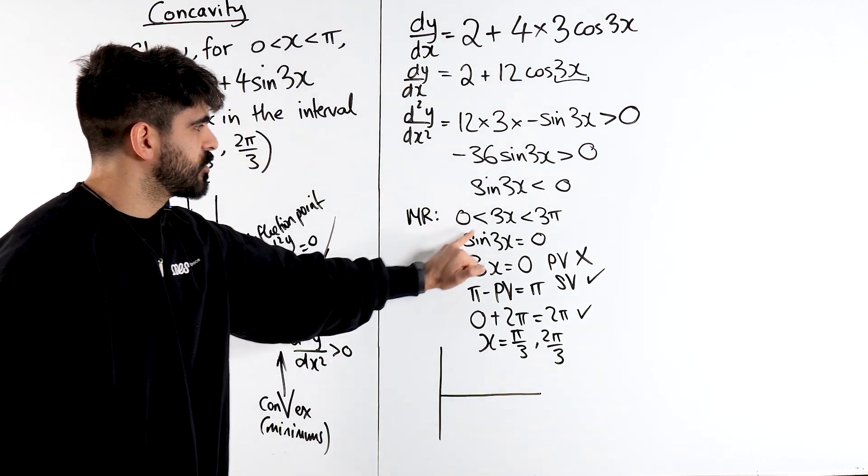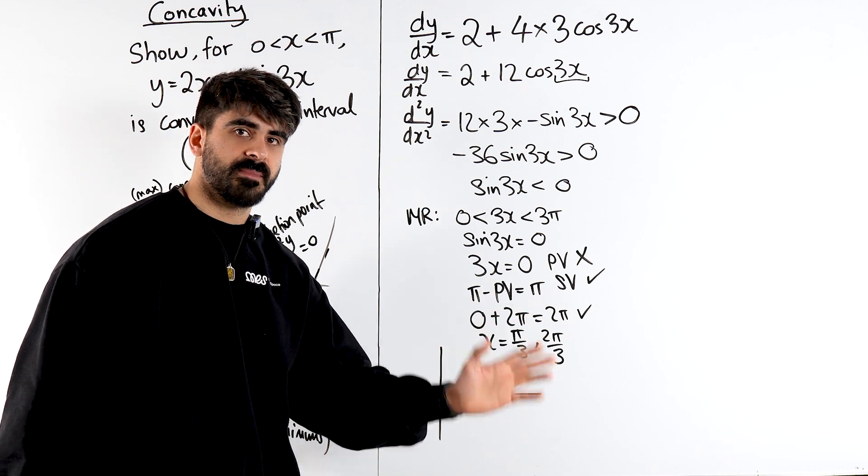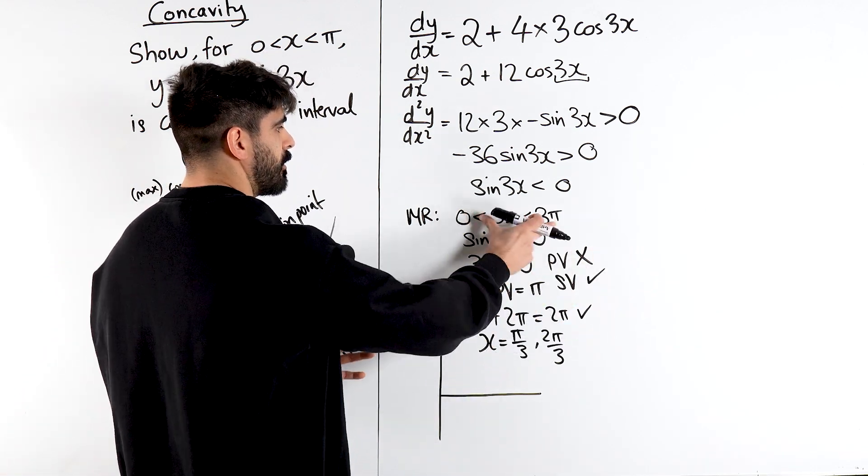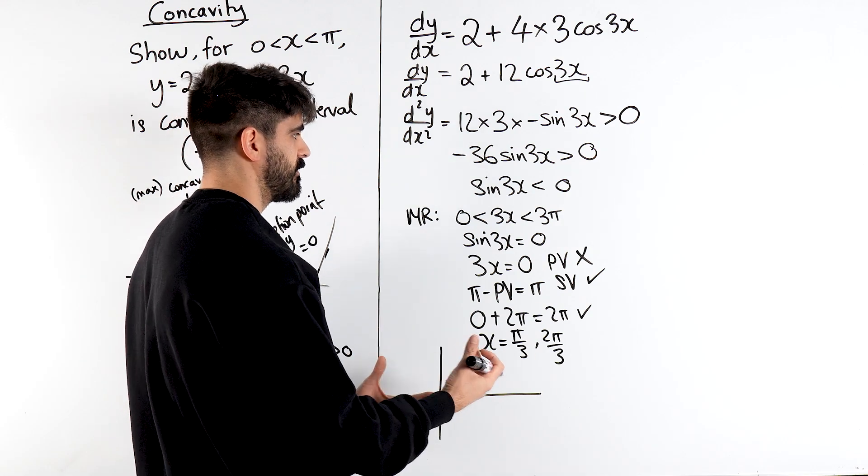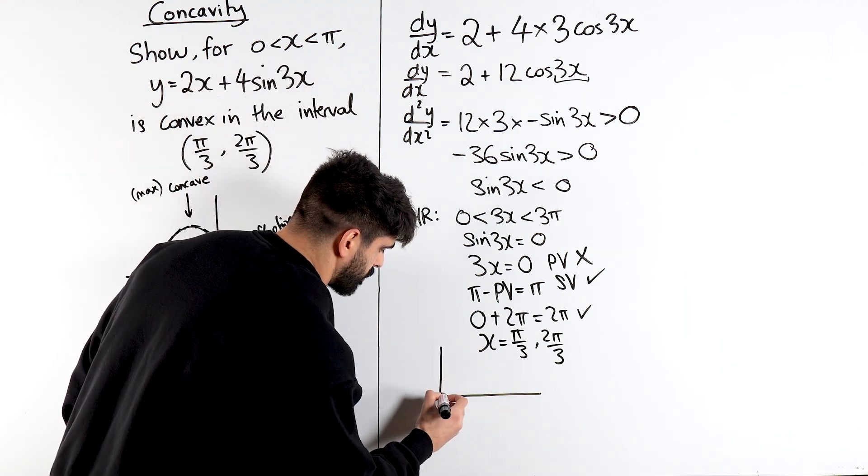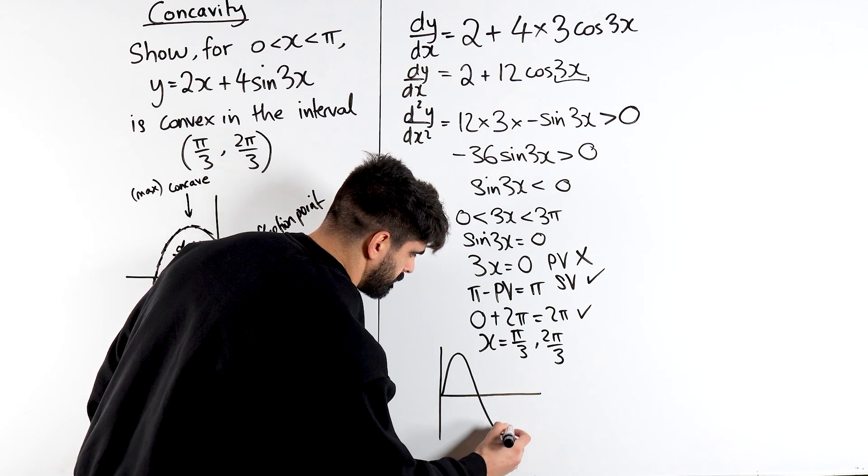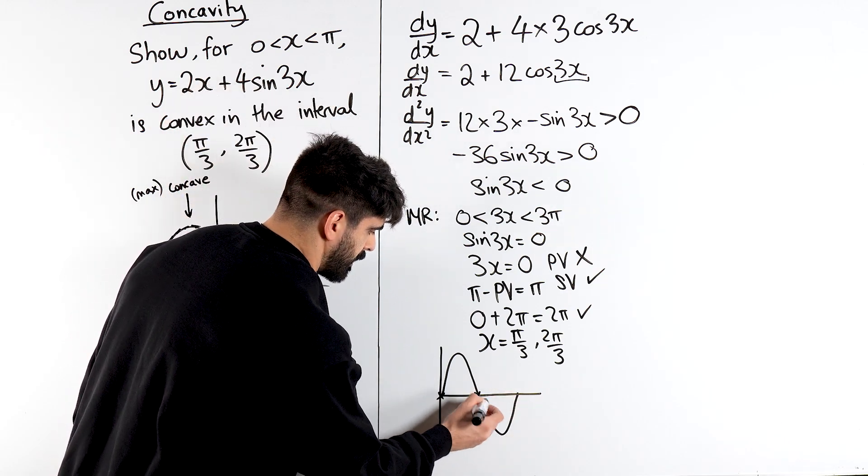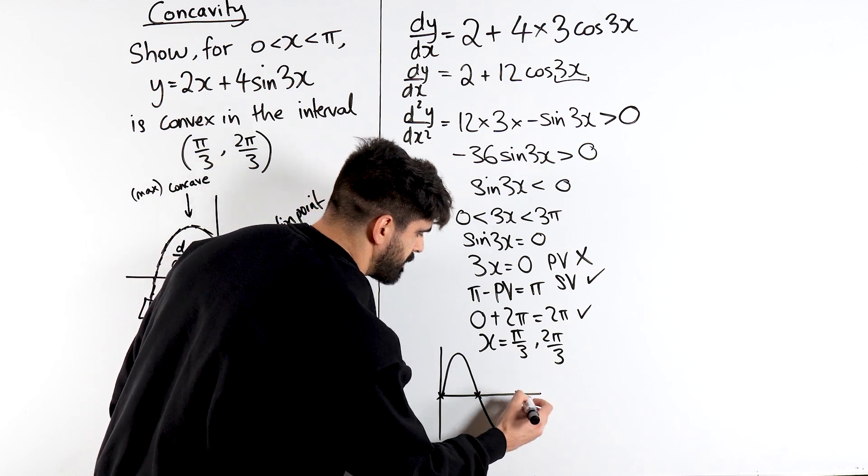So we draw the sine graph between 0 and 3π, and then we're just going to divide everything by 3 afterwards. Because we know 3x divides all the x values by 3. But we draw within the modified range and then we divide everything by 3. So the sine graph here, that's the 2π. So we've got 0, π, 2π, 3π will be one more.